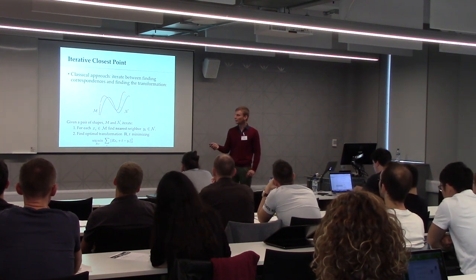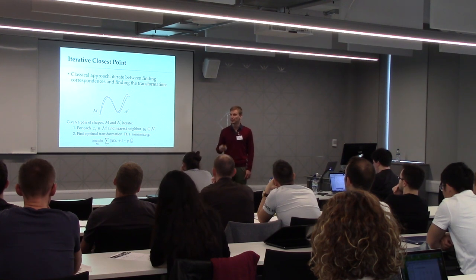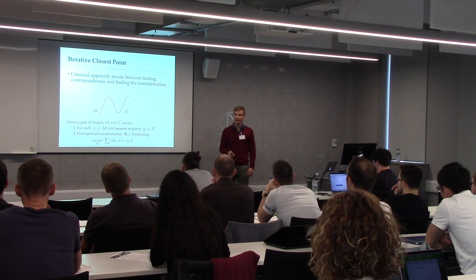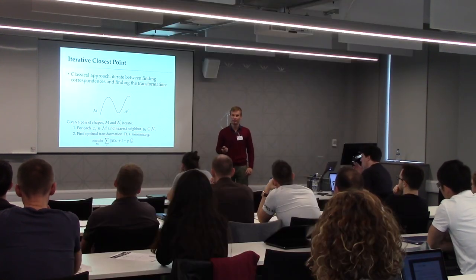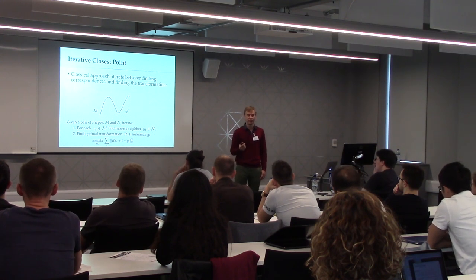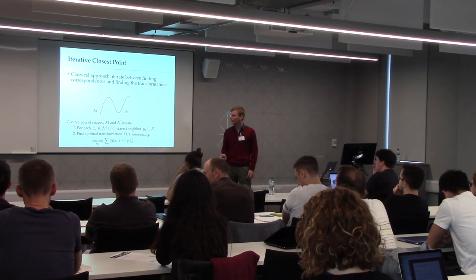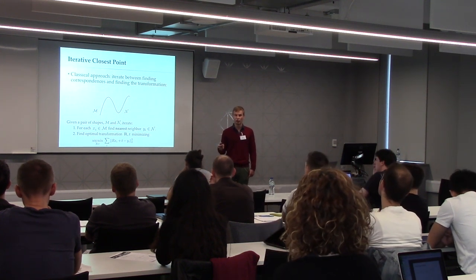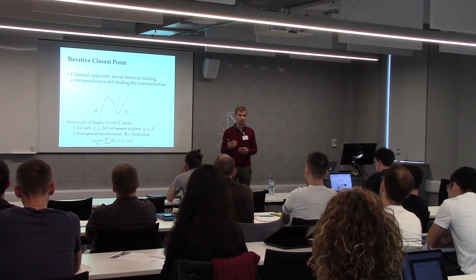To implement this algorithm you essentially need two building blocks. The first is how to find the nearest neighbors for every point on M on N. The second is: given these nearest neighbors, how do you find the optimal rotation and translation? The nice thing is that we have very efficient tools that allow us to solve both problems very easily.